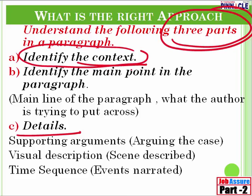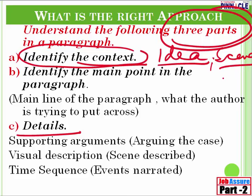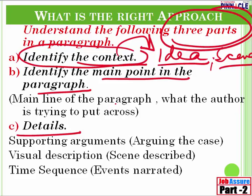What do I mean by context? Context means what is the idea about which the author is talking. If he is describing a scene, is he talking about a bus accident, a fire, or a celebration at home? Identify the context — what is being talked about in the paragraph. Once you identify that, then identify the main point. Suppose he is talking about Diwali and trying to drive home the point that you shouldn't use crackers because they cause pollution — that causing pollution is the main point in the paragraph.